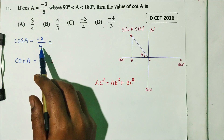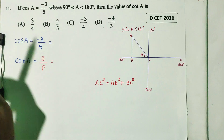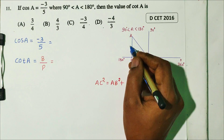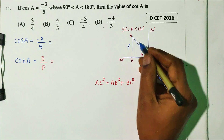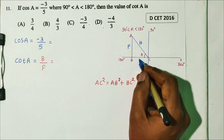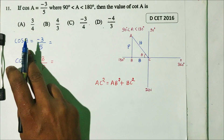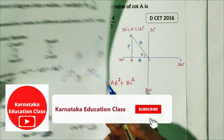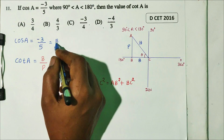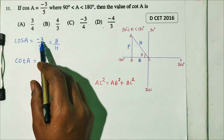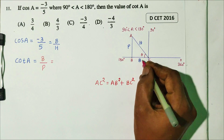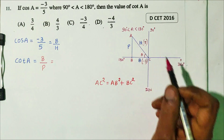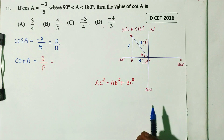cos A is a trigonometry ratio. If we reference angle theta, the sides are: the opposite side is perpendicular, the longest side is hypotenuse, and the remaining side is the base. There are three sides. cos theta equals base divided by hypotenuse.